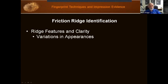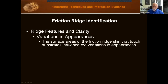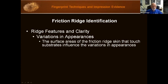Examiner understanding of variations in appearances among prints is needed before examination takes place. Each independent print from the source will vary in appearance from every other independent print from the same source. Many factors influence these variations. For example, the surface areas of the friction ridge skin that touch substrates influence the variations in appearances. The exact surface area of the skin touching one substrate will not be the exact surface area of the skin that touches a second substrate — each time the skin touches a substrate, the surface is going to vary.